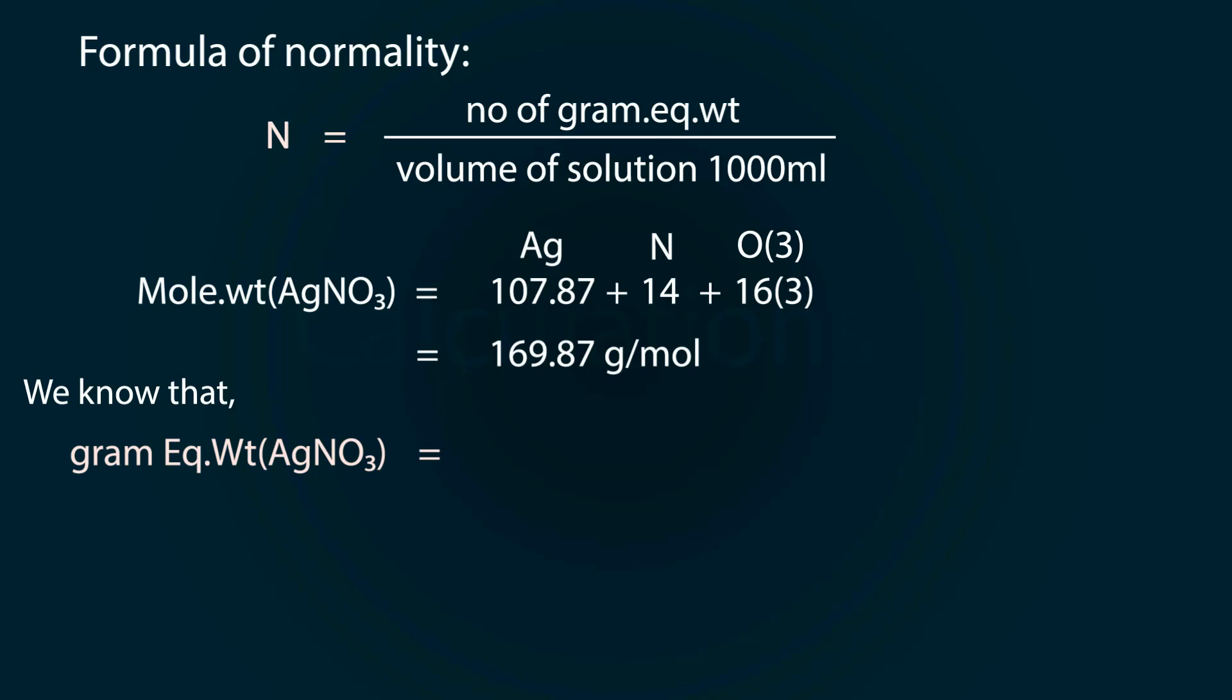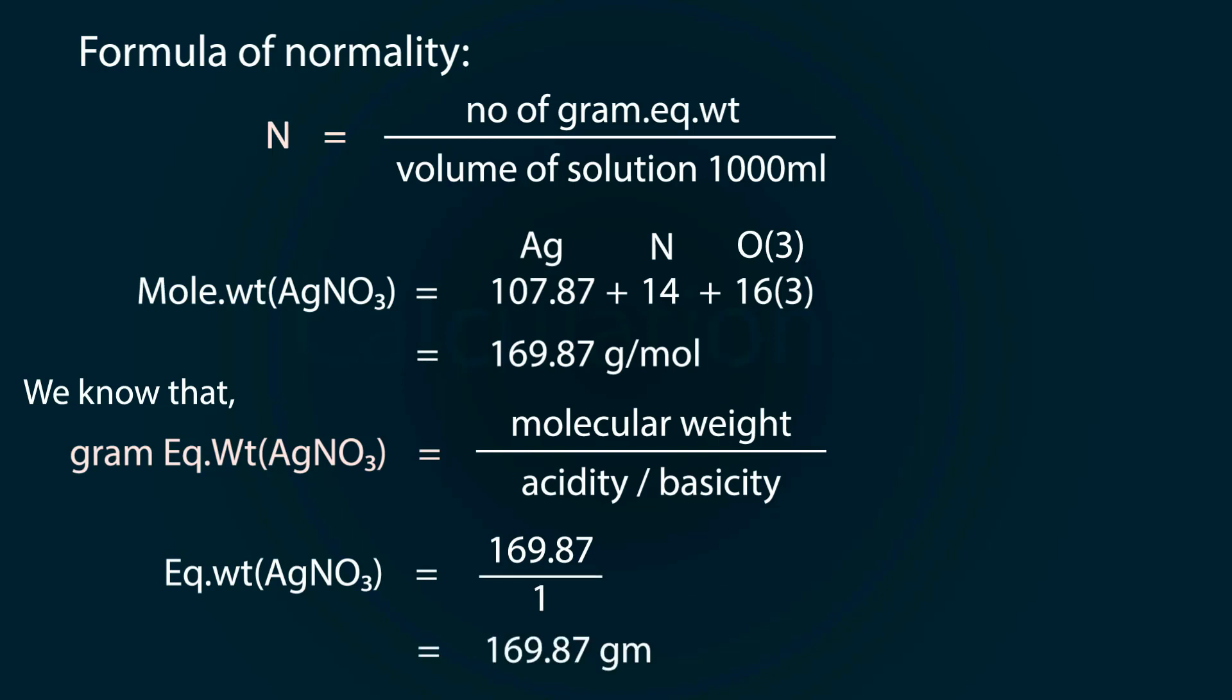We know that number of gram equivalent weight is equal to molecular weight divided by acidity or basicity. So the molecular weight is 169.87 grams per mole, and the acidity of silver nitrate is 1. So gram equivalent weight will be equal to 169.87 grams.